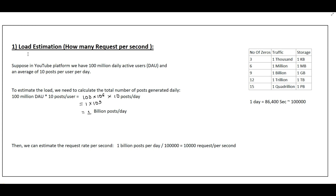For back-of-envelope, first we'll calculate the load on the system — how many requests per second are coming. Suppose in our YouTube platform we have 100 million daily active users and on average 10 posts per user per day. We have to calculate how many requests we are getting per second. First, let's calculate total posts per day: 100 million daily active users multiplied by 10 posts per user.